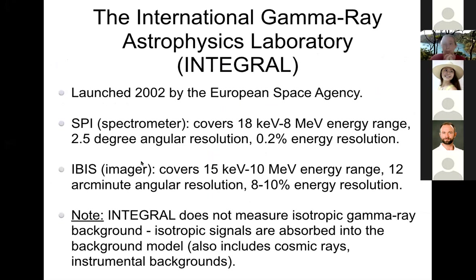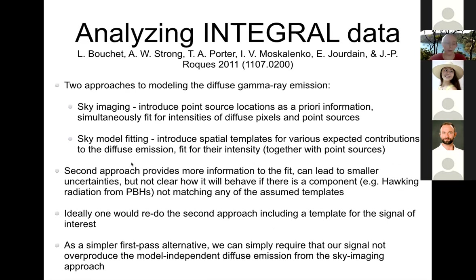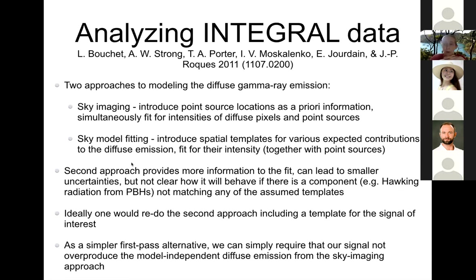We wanted to take that prediction and compare it to the data from INTEGRAL. INTEGRAL is one of the older experiments we have around - it was launched in 2002 by the European Space Agency. It has two instruments, SPI and IBIS, one of which has better angular resolution and worse energy resolution, and the other is optimized for better energy resolution and worse angular resolution. It's worth noting that INTEGRAL does not measure the isotropic gamma ray background - you can't use the INTEGRAL data and compare it to your prediction for extragalactic gamma rays, at least in the analyses that they've done. These isotropic signals are just not directly observable.